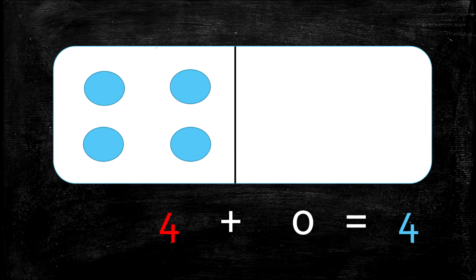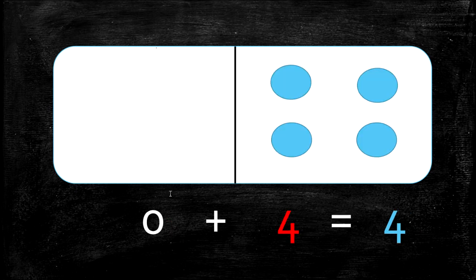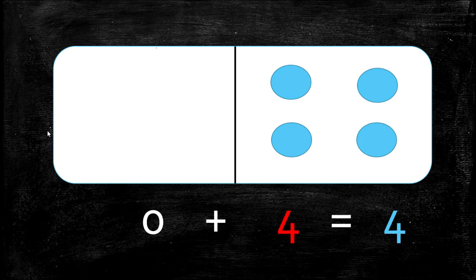We're going to do the same fact but flip it. We have 0 plus 4 equals 4. In the first box here we have 0. In the second box we have 1, 2, 3, 4. How many do we have altogether? 1, 2, 3, 4. Because 0 plus 4 equals 4.